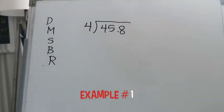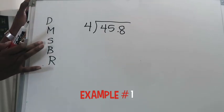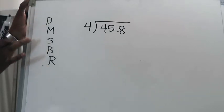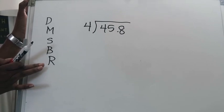Alright, in this example we're going to be dividing 45 and 8 tenths. I've written my division steps here. Does McDonald's sell burgers raw or divide first, then multiply, then subtract, then bring down, then ask yourself, do you have remainder?